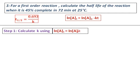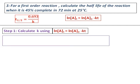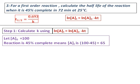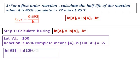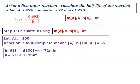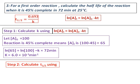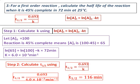The reaction is 45% complete, meaning the concentration of A at time t is 100 minus 45, which equals 65, assuming an initial concentration of 100. Substituting these values into the equation with time equal to 72 minutes, we get the value of k with units in minutes. Then in step 2, using t-half equals 0.693 divided by k, we get t-half equal to 116 minutes.